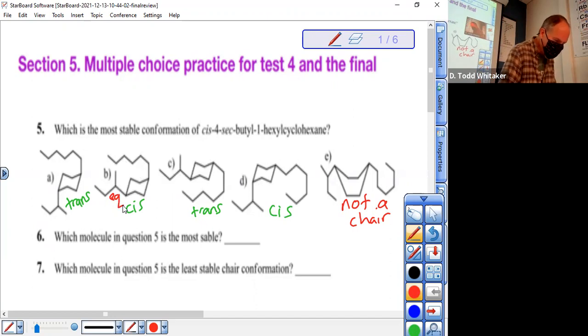Which makes the answer for five B. In D, the bulkier group's axial, that's not good news. It's suffering from 1,3-diaxial repulsion with that H and this H.